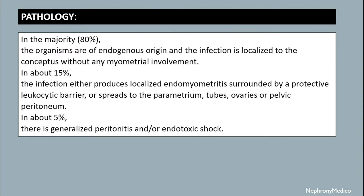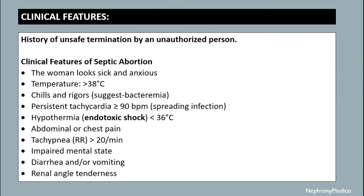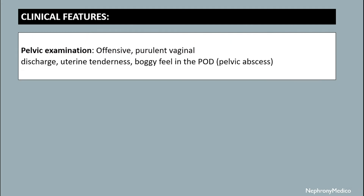Clinical features: there is history of unsafe termination by an unauthorized person. The woman looks sick and anxious. Temperature is more than 38 degrees centigrade. Signs include persistent tachycardia more than 90 beats per minute, hypothermia less than 36 degrees centigrade, abdominal or chest pain, tachypnea more than 20 breaths per minute, impaired mental state, diarrhea and/or vomiting, and renal angle tenderness.